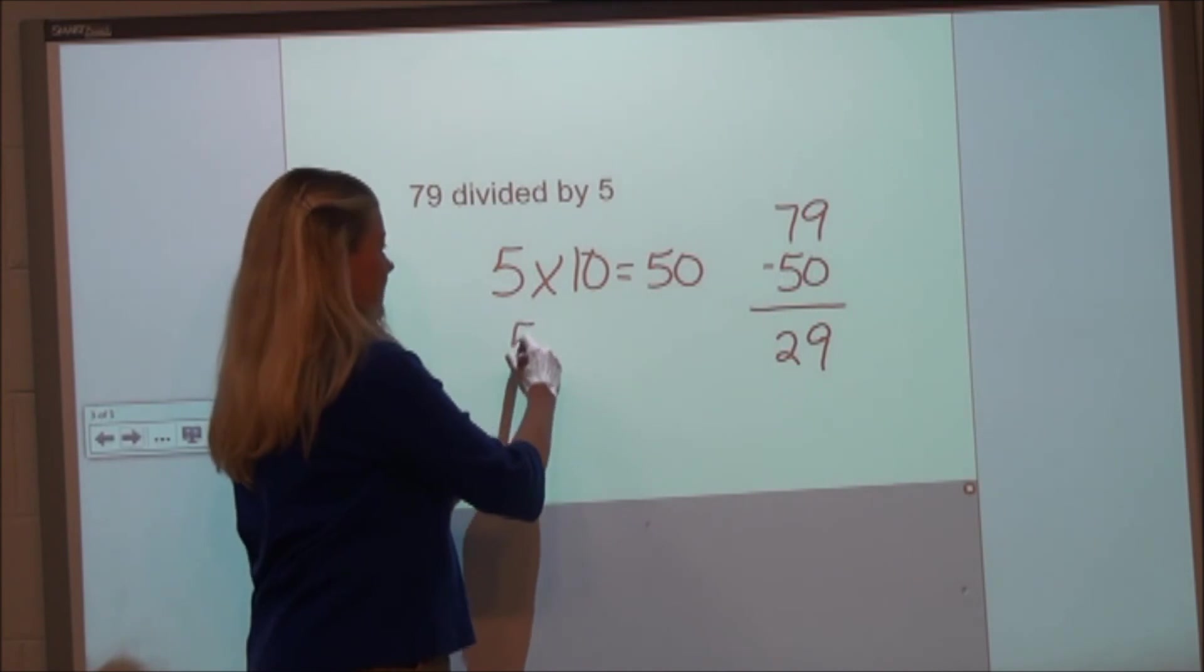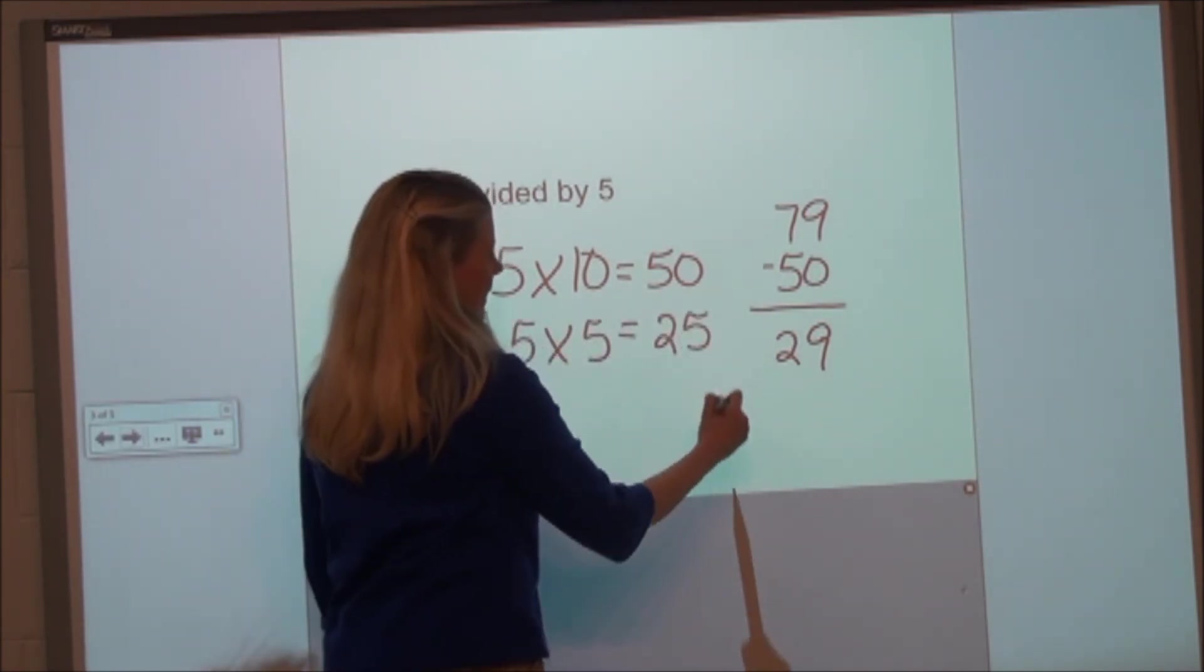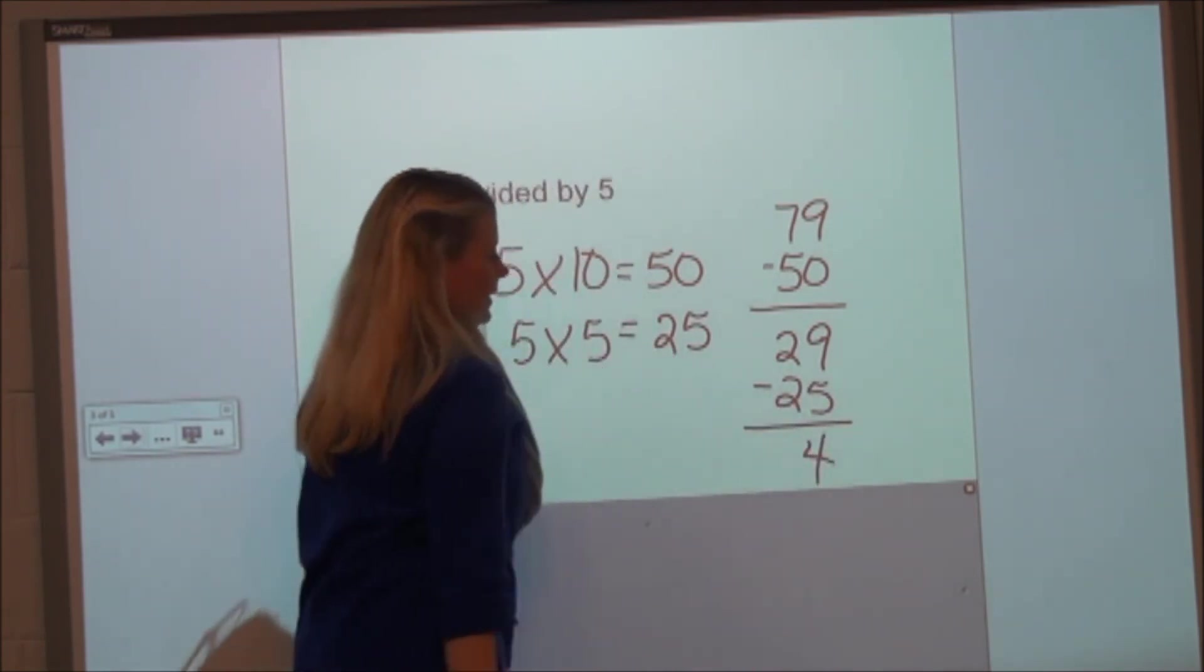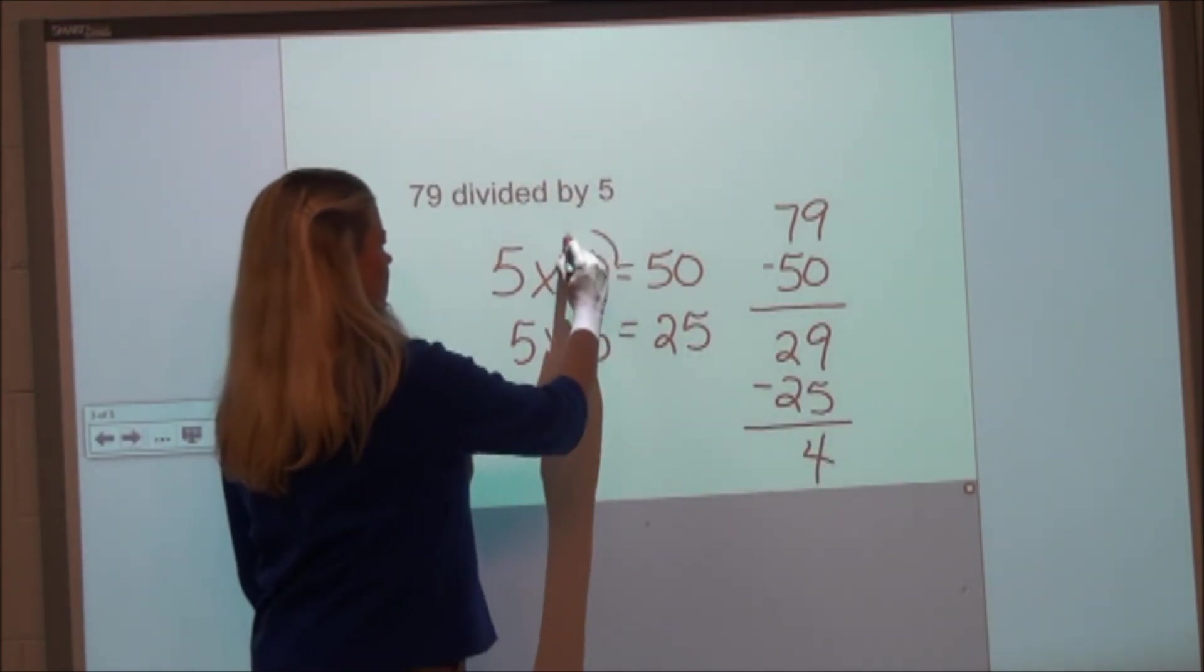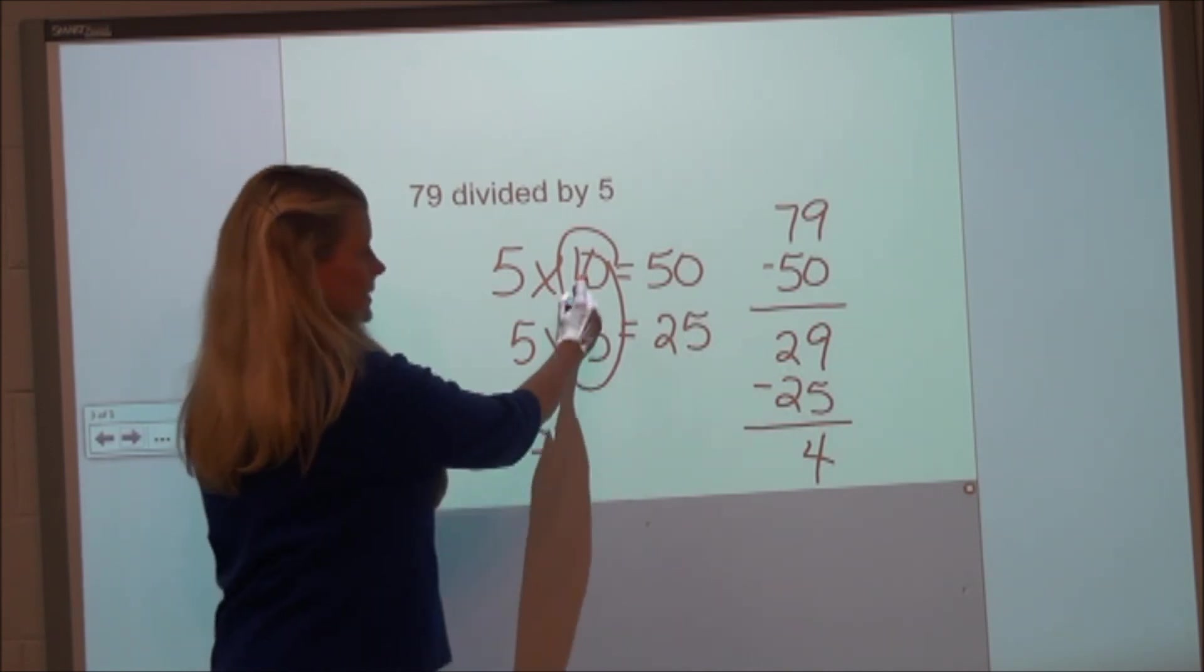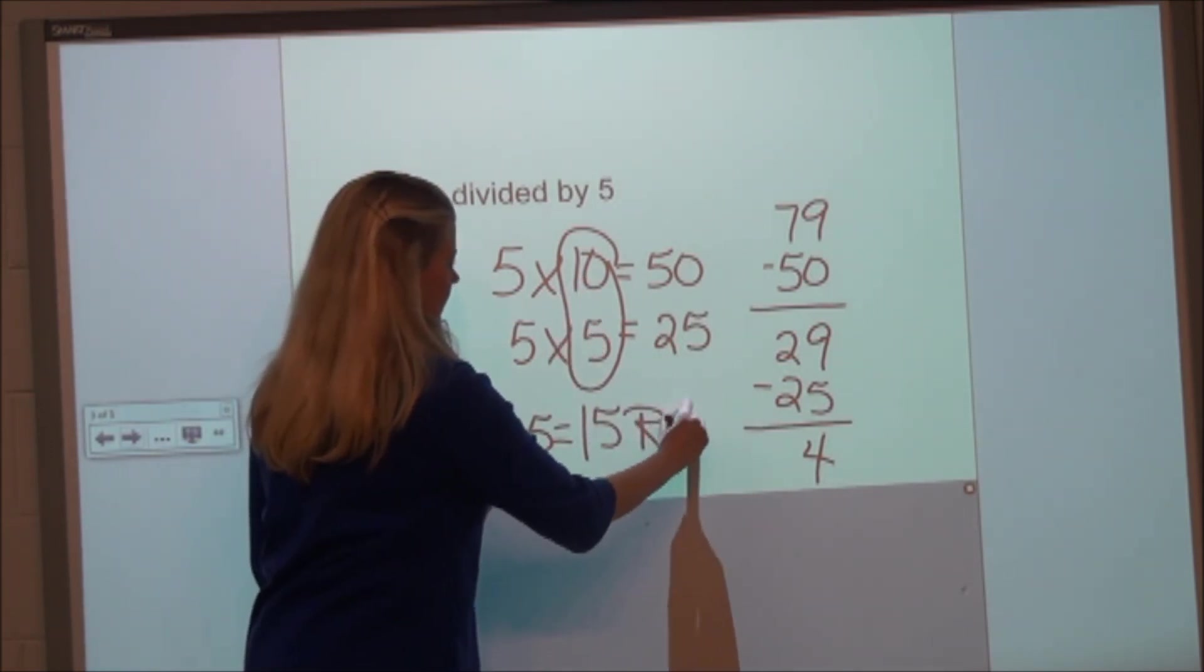Well, I know 5 times 5 is 25. I'm going to take that 25 away, and I have 4 left over. So that tells me that 79 divided by 5 equals 15 with a remainder of 4.